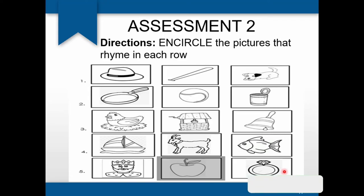And the last one, encircle the pictures that rhyme in each row. I will tell the name of each picture: cat, hat, bat. Pan, ball, can. Hen, whale, bell. Boat, goat, fish. King, apple, ring.